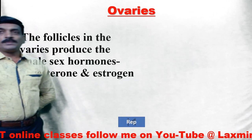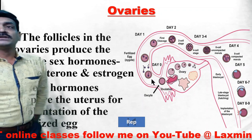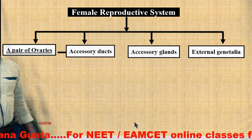The follicles in the ovaries produce the female sex hormones estrogen and progesterone. These hormones prepare the uterus for implantation of the fertilized egg. You can clearly observe the fertilized egg moving from the fallopian tube. Coming back to the accessory ducts — accessory ducts include the oviducts, uterus, and the vagina.